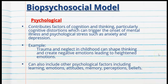The psychological part of the model contributes factors of cognition and thinking, particularly cognitive distortions, which can trigger the onset of mental illness and psychological stress such as anxiety and depression. For example, trauma and neglect in childhood can shape thinking and create negative emotions, leading to heightened emotions and distorted thinking — these are all psychologically based, concerning what's going on in the brain.